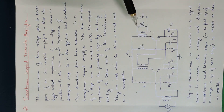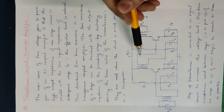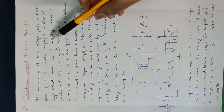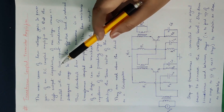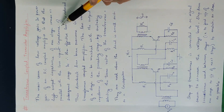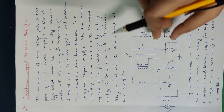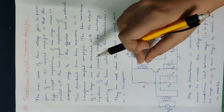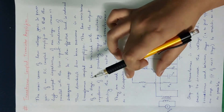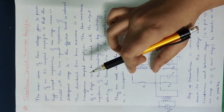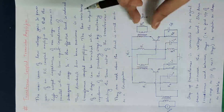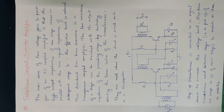The step-down transformers are used to match the RC-coupled amplifier. The high output impedance of one stage comes in parallel with the low input impedance of the subsequent stage. Since the input impedance is low and the output impedance is high, we use the step-down transformers.